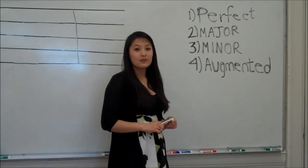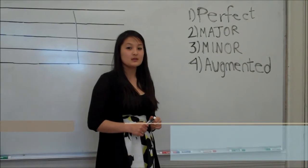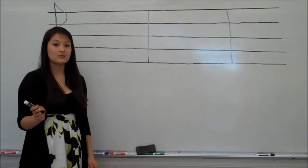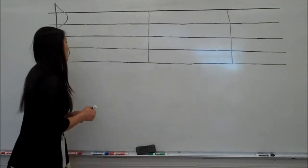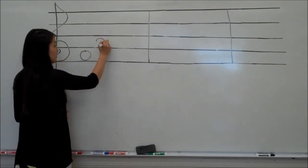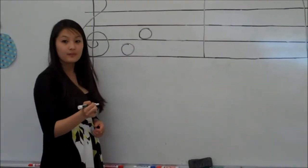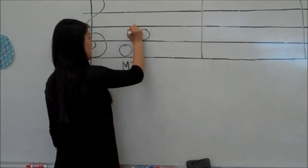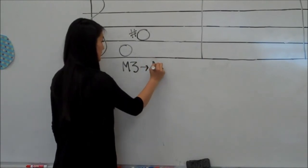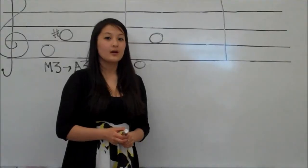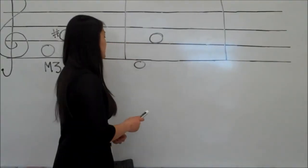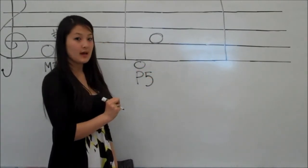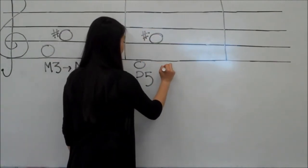Next we have the augmented interval, and this is if a perfect or a major interval is made one half step higher without changing the interval number, so the top note is raised half a step from its major or perfect position. For example, if you had an F going to an A, which would normally be a major third, but if you raise the A half a step making it A sharp, it becomes an augmented third. Another example is if we have a D going to an A, which would normally be a perfect fifth, but raising the A to A sharp makes it an augmented fifth.